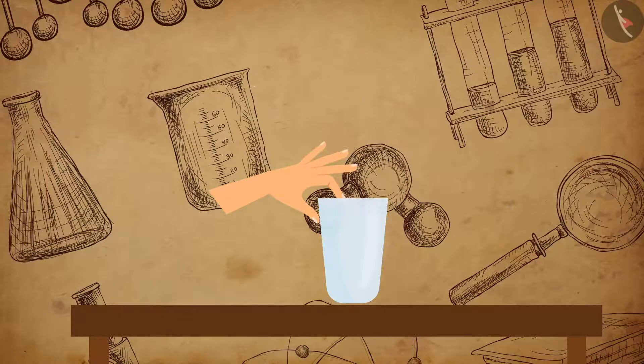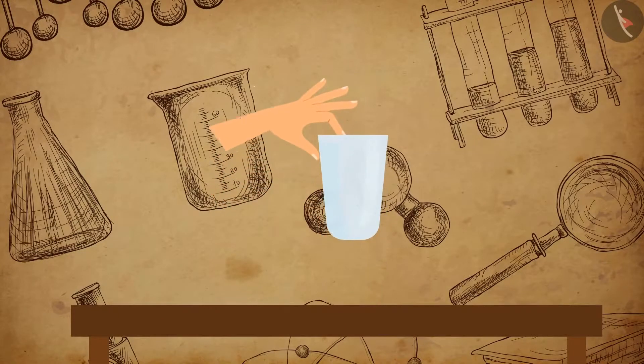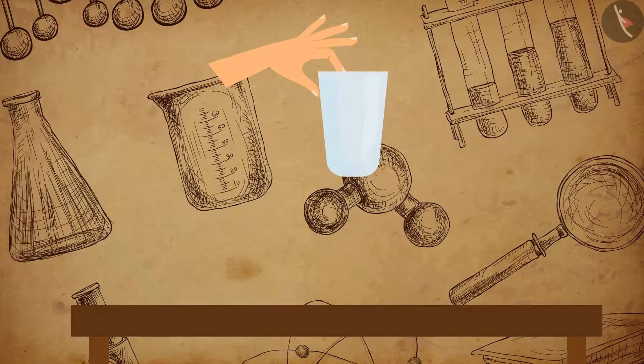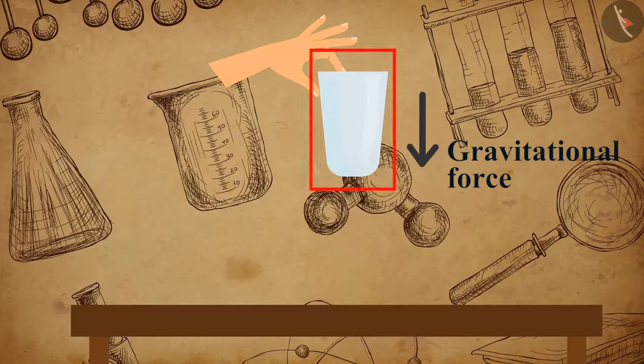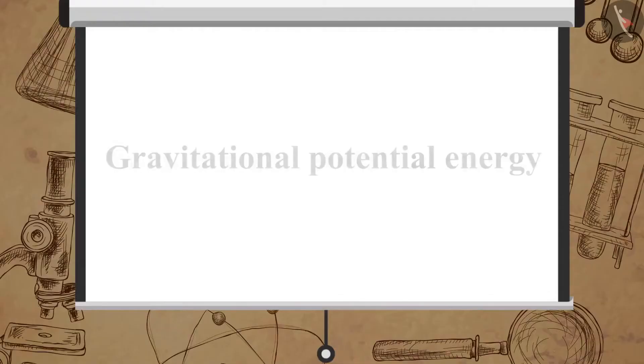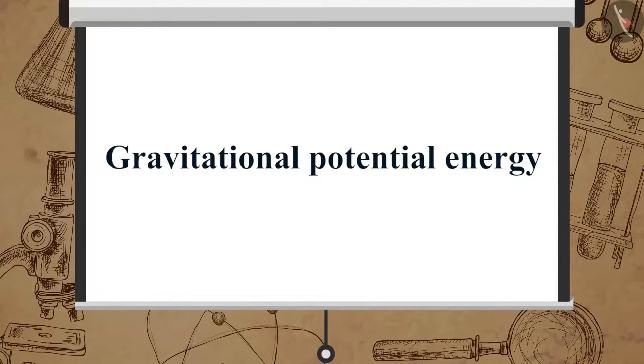Now, let us understand what happens to the potential energy of an object when raised to a certain height. When an object is raised to a certain height, work is done on it by us against gravitational force, due to which an object possesses more energy when raised to a greater height.